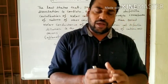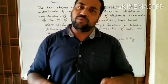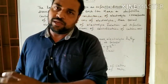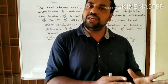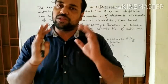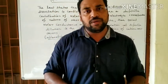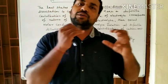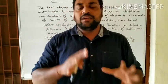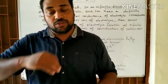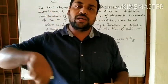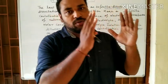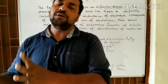When we consider infinite dilution, each ion will make a definite contribution towards the molar conductance of the electrolyte. At infinite dilution, the contribution of a cation does not depend upon the anions present, and the contribution of an anion does not depend upon the cations. Therefore, the total molar conductance at infinite dilution is simply the sum of the contributions of the cations and the anions.